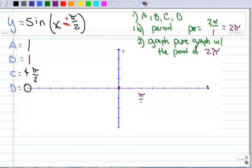Pi over 2, pi. I just want to make sure it's big enough for you to see. 3 pi over 2, 2 pi. And I know I'm going to have to extend it, so I'm just going to extend it out there and be ready for that.